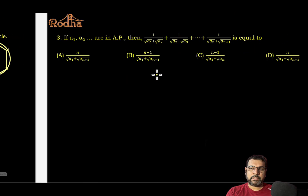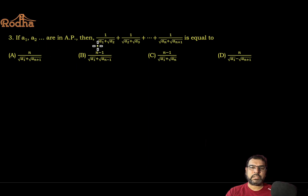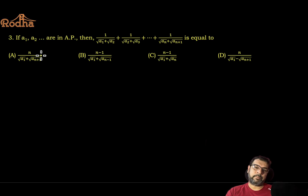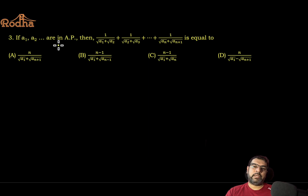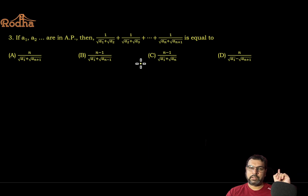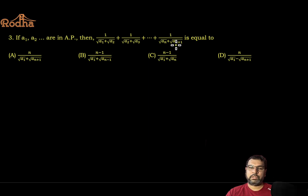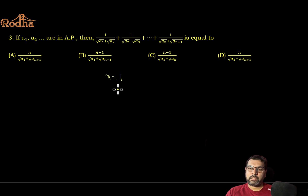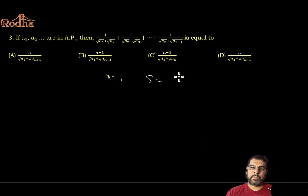The third question, from one of the last two to three years: if a1, a2, a3,... are in AP, find the value of the given series sum up to n terms. Using the same trick as question one — put n = 1. When n = 1, there is only one term, so the sum equals 1/(√a1 + √a2). Now check each option: whichever gives 1/(√a1 + √a2) when n = 1 is the answer.